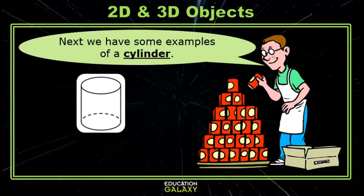Next, we have some examples of a cylinder. A cylinder has two bases that are circles. These bases are parallel and congruent — that means they're the same size.